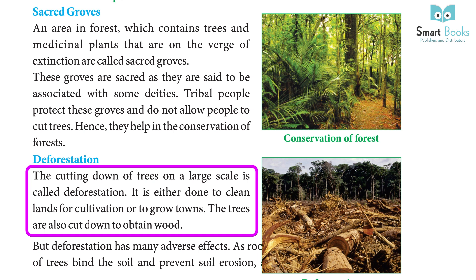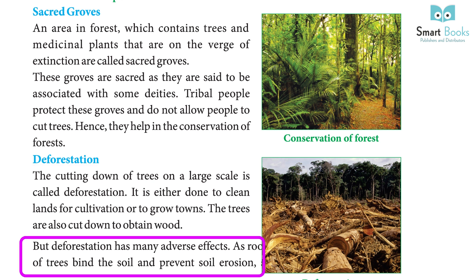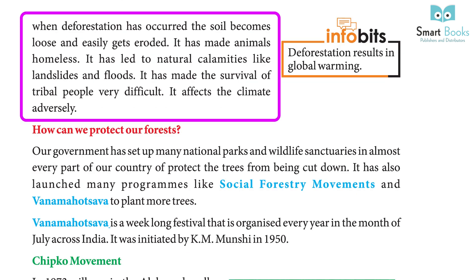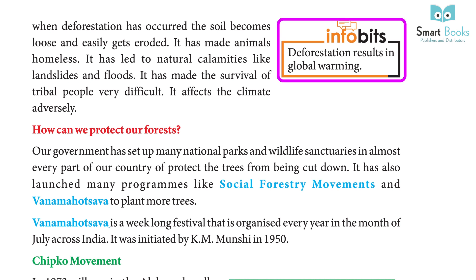The cutting down of trees on a large scale is called deforestation. It is either done to clear land for cultivation or to grow towns. Trees are also cut down to obtain wood. Deforestation has many adverse effects: the roots of trees bind the soil and prevent soil erosion, so when deforestation occurs the soil becomes loose and easily gets eroded. It has made animals homeless, led to natural disasters like landslides and floods, and made the survival of tribal people very difficult.